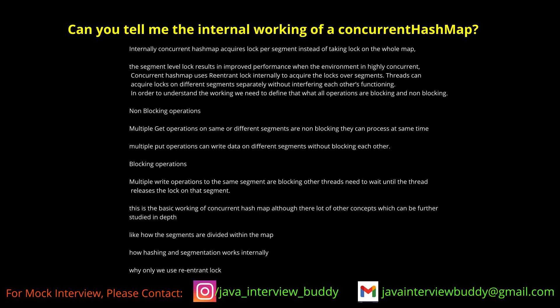Can you tell me the internal working of ConcurrentHashMap? In Java 1.8, ConcurrentHashMap is divided into segments, and each segment consists of one HashMap. It will not lock the whole object — multiple threads can read concurrently because it is divided into segments. If threads need to write into different segments, that is also possible. Internally it uses ReentrantLock, which helps perform these kinds of concurrent operations.